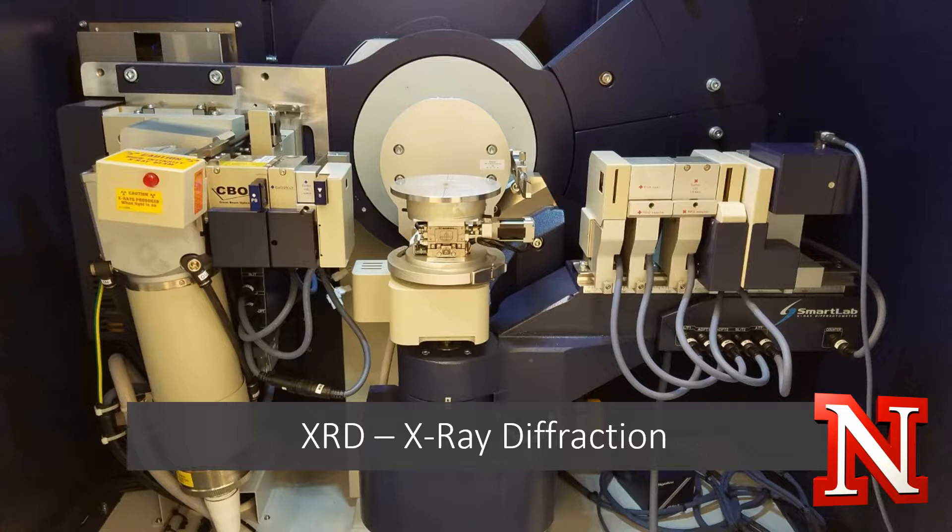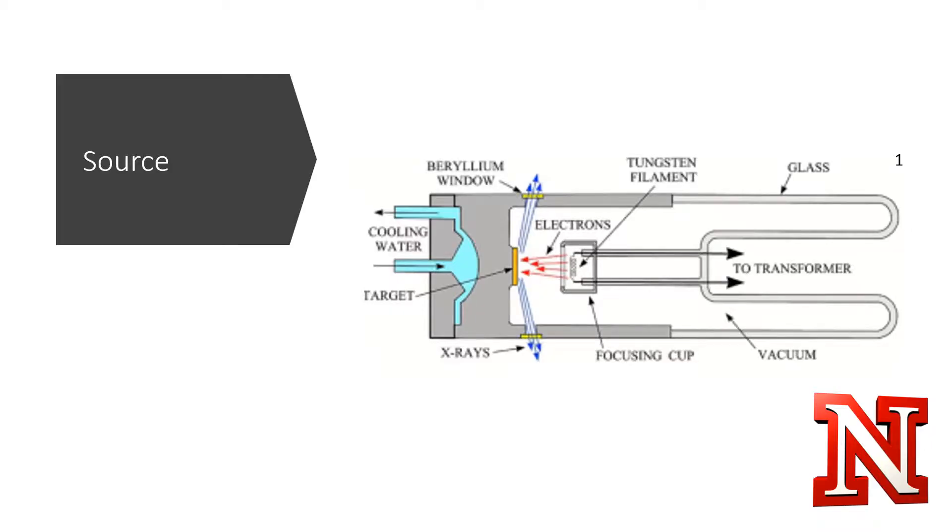This is an image of the XRD system we have access to. The x-ray tube, also known as the source, is what produces the x-rays.